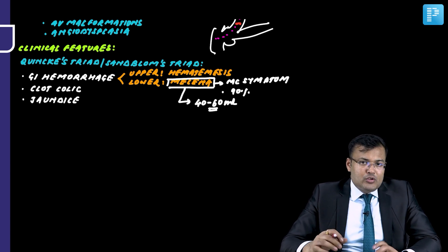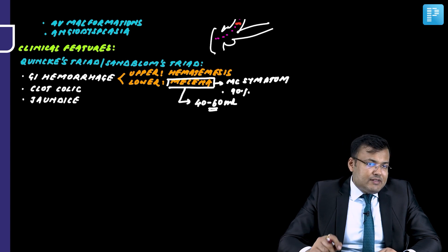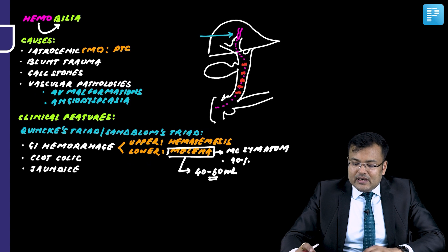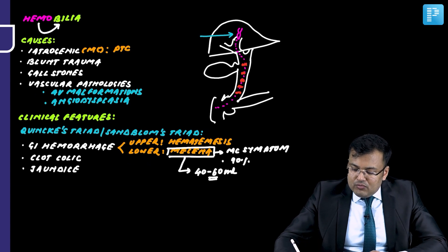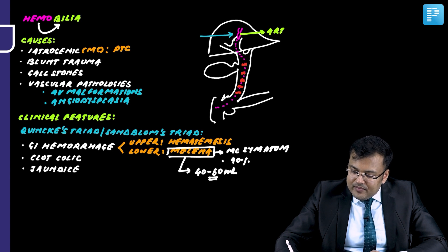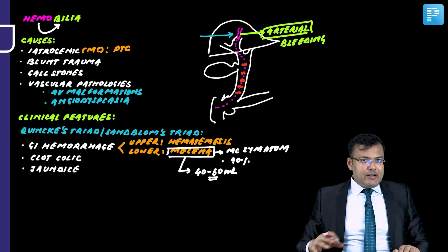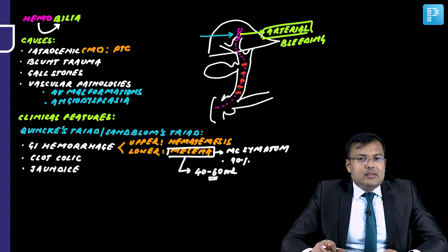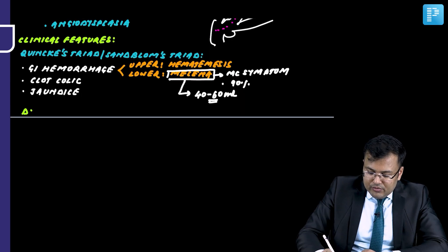Since the patient has GI bleeding, the first investigation done is upper GI endoscopy. The most common source of bleeding in hemobilia is arterial. Because the bleeding is arterial, angiography is the gold standard investigation — it is both diagnostic and therapeutic.